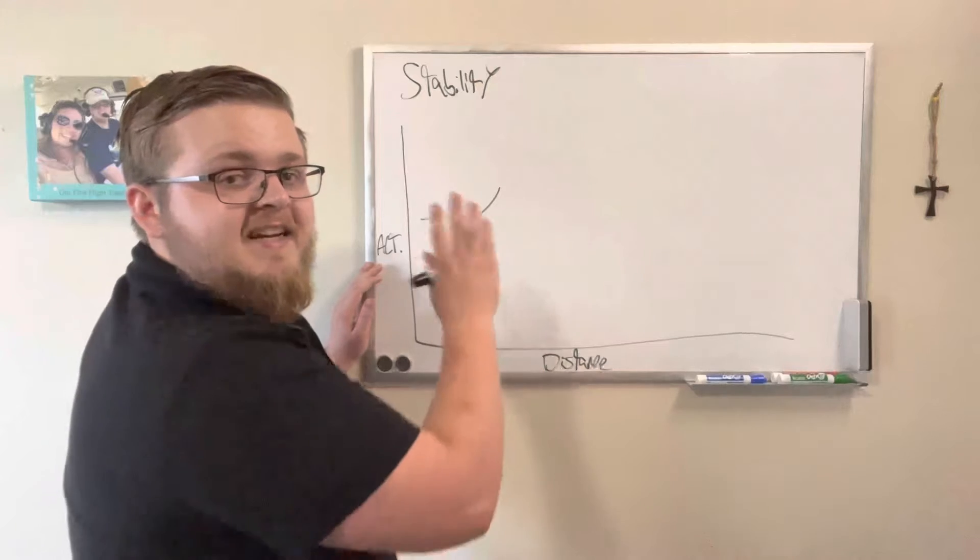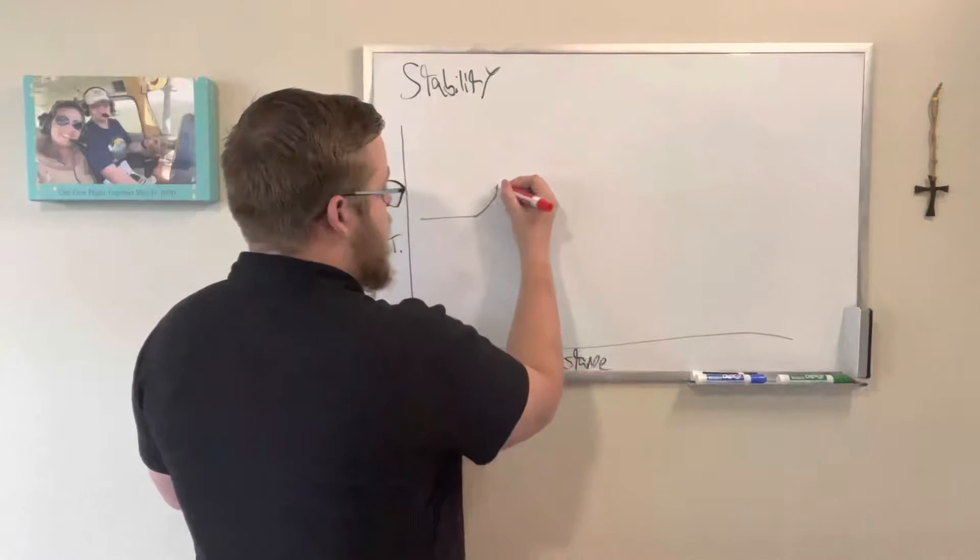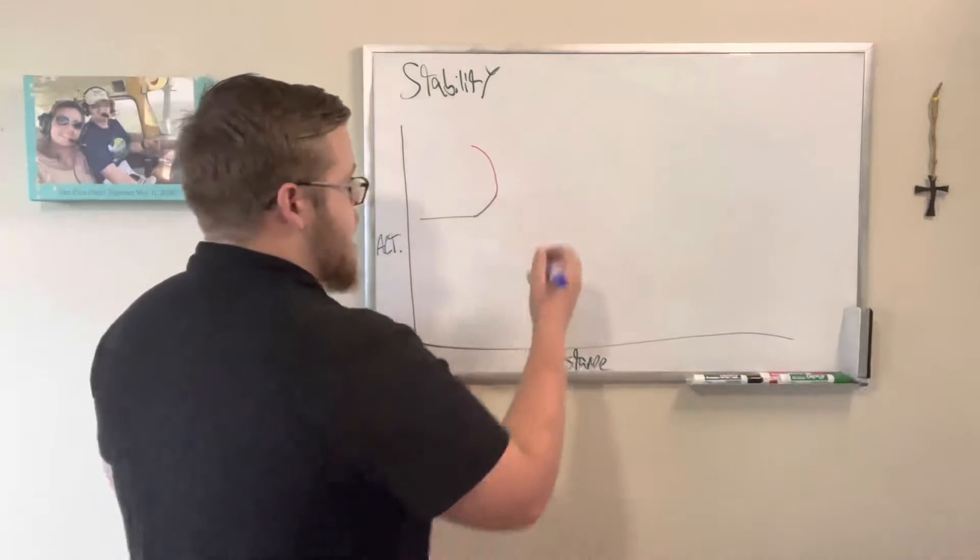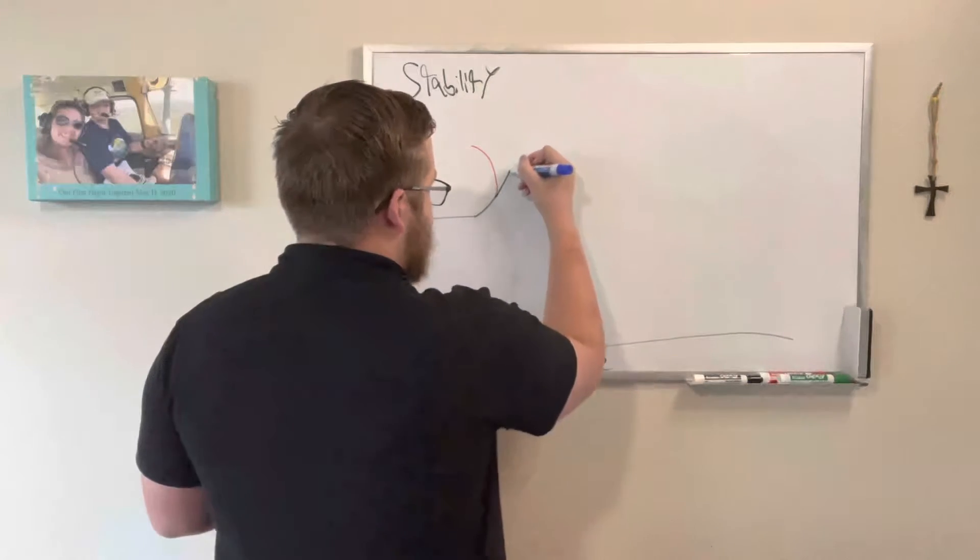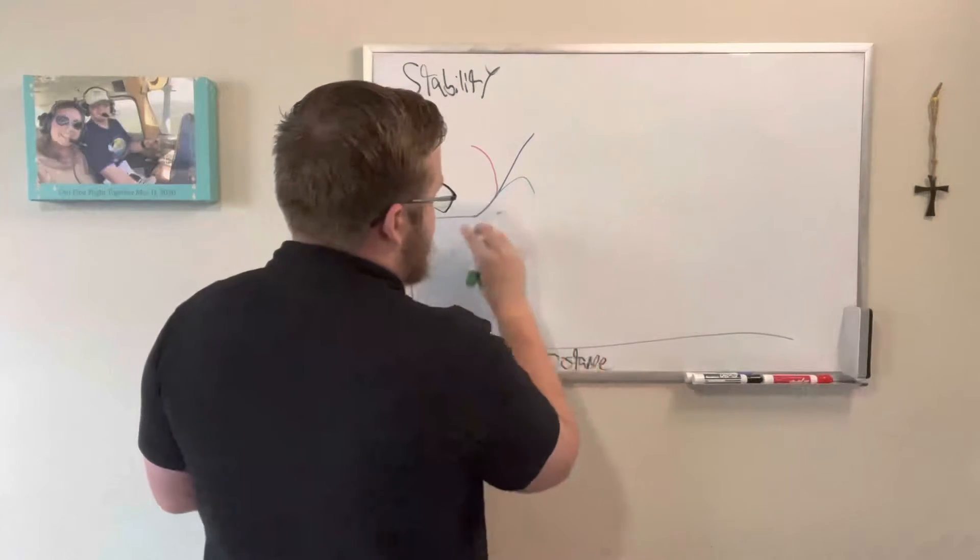Static stability is what it does initially from this point. Negative static stability would involve it pitching up more and making the trend even worse. Neutral static stability would involve it not changing from the new input, and positive static stability would involve it trending back towards the original position.